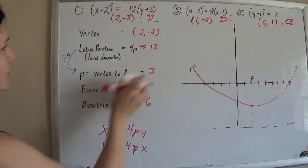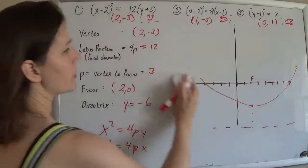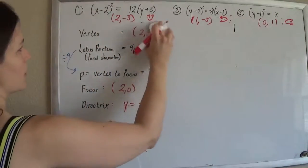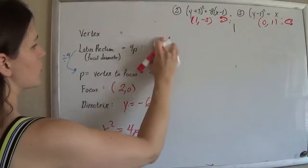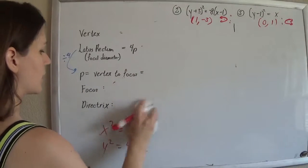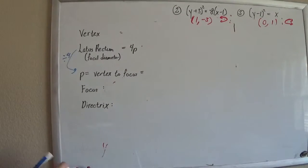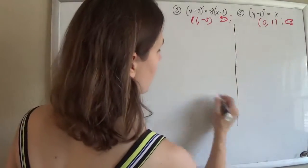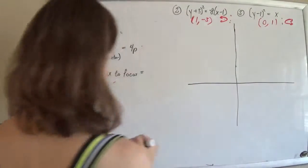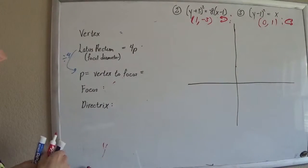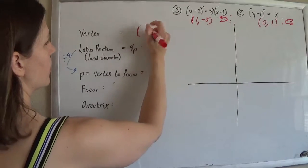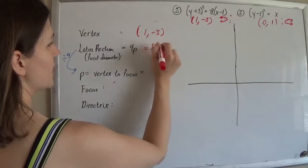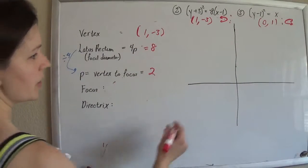We will do it again. Let's see. So I'll give you this. Alright. So this guy, we already figured out our vertex was 1, negative 3. The 4p is 8. Divide that by 4, p is 2.